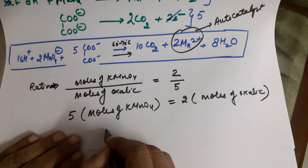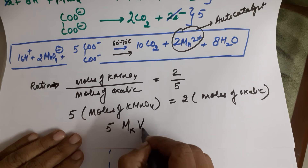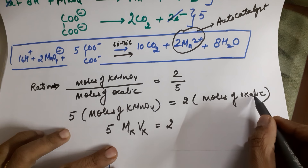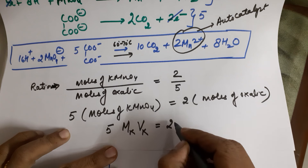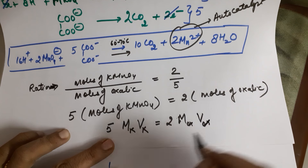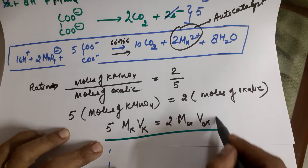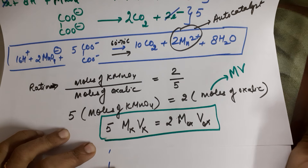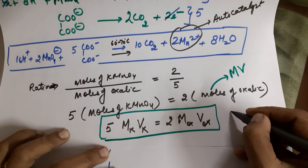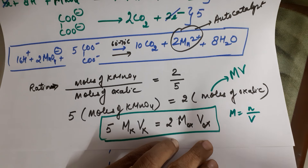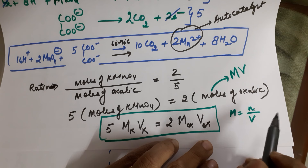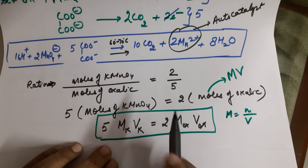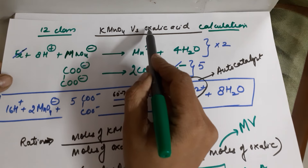The final formula we end up with is: 5 × Molarity of KMnO4 × Volume of KMnO4 = 2 × Molarity of oxalic acid × Volume of oxalic acid, because moles is nothing but molarity into volume. This formula is used for all titration calculations involving KMnO4 versus oxalic acid. Molarity is given by number of moles divided by volume in solution, so number of moles always equals molarity × volume.